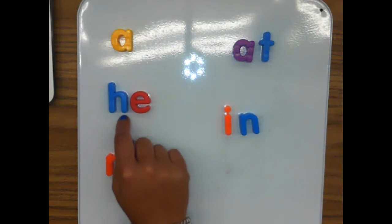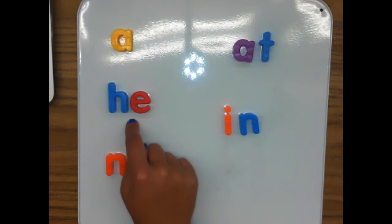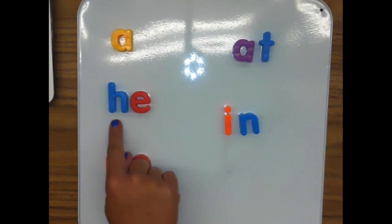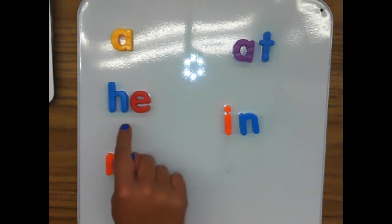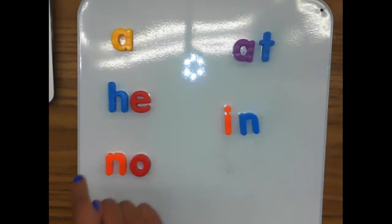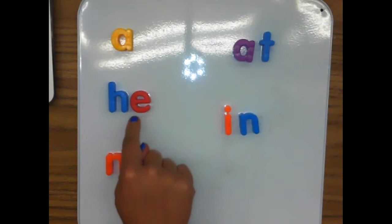Ready, let's spell it. H-E spells he, he, he. Do it again, say it with me. H-E spells he, he, he. Again, H-E spells he, he, he.